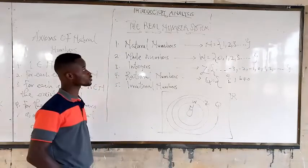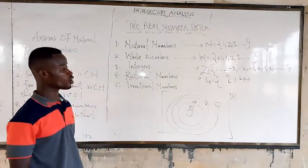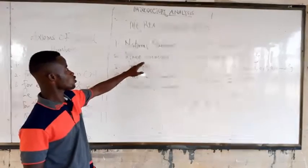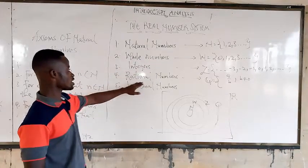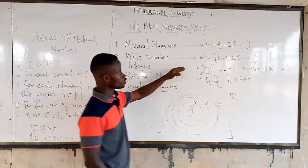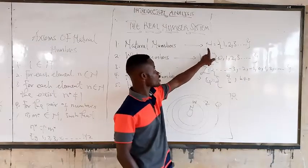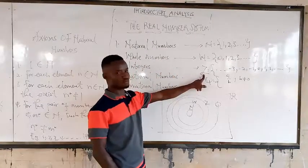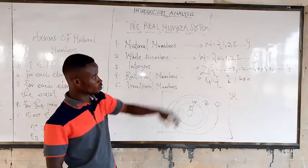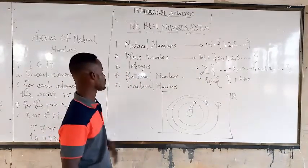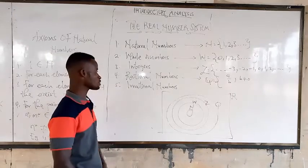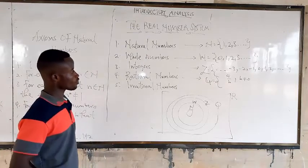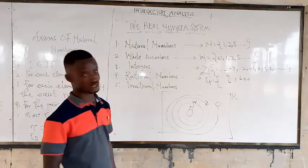We are going to look at the real numbers system. You all know the real numbers system before — we know the natural numbers, the whole numbers, the integers, the rational numbers, and the irrational numbers. N represents natural numbers, W represents whole numbers, integers are represented by Z, rational numbers by Q, and we have the irrational numbers represented by W with a stroke.